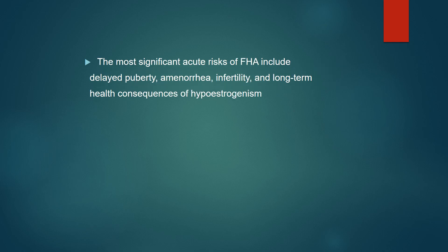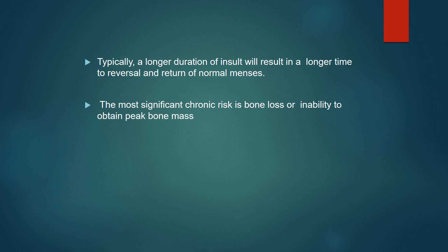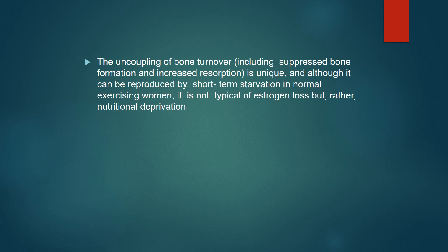The most significant acute risk factors of FHA include delayed puberty, amenorrhea, infertility, and long-term health consequences of hypoestrogenism. Typically, a longer duration of insult will result in a longer time for reversal and return to normal menses. The most significant chronic risk is bone loss or inability to obtain peak bone mass. The uncoupling of bone turnover, including suppressed bone formation and decreased resorption, is unique and, although it can be reproduced by short-term starvation in normal women, it is not typical of bone loss but rather nutritional deprivation.